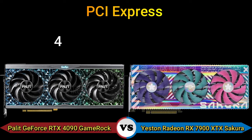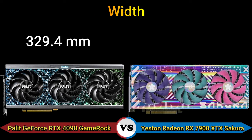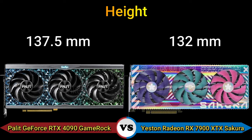PCI Express 4. Width: 329.4 mm and 330 mm. Height: 137.5 mm and 132 mm.